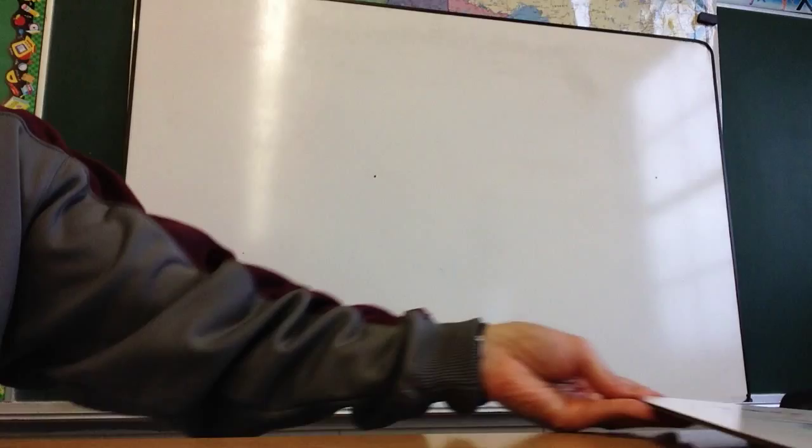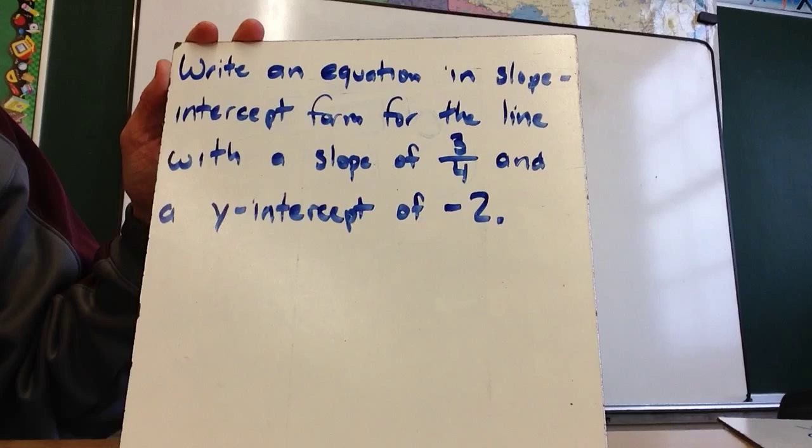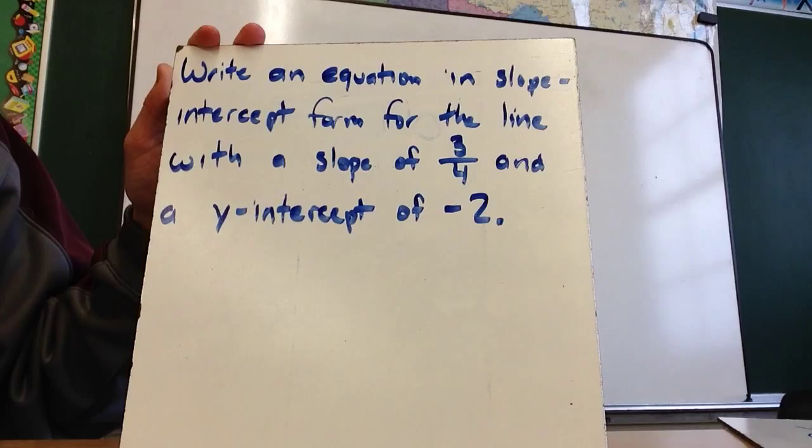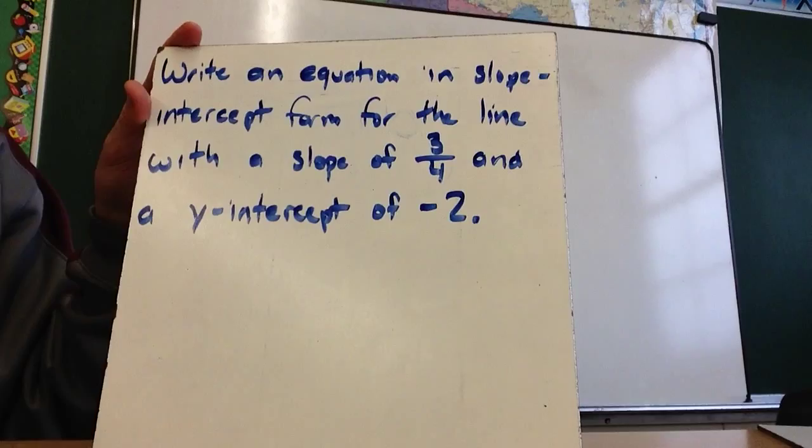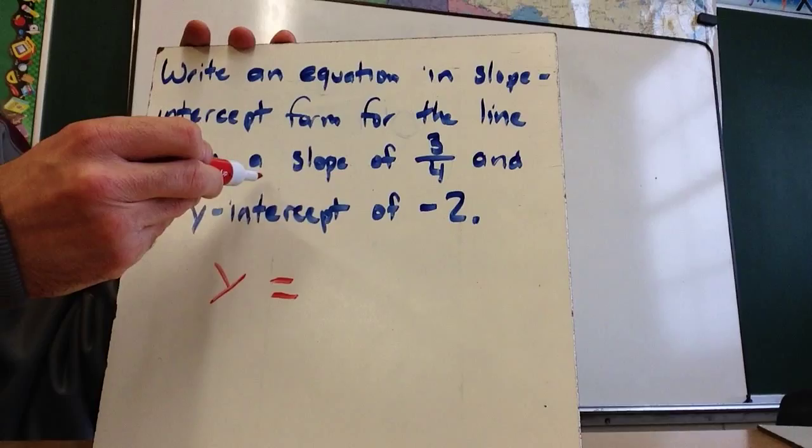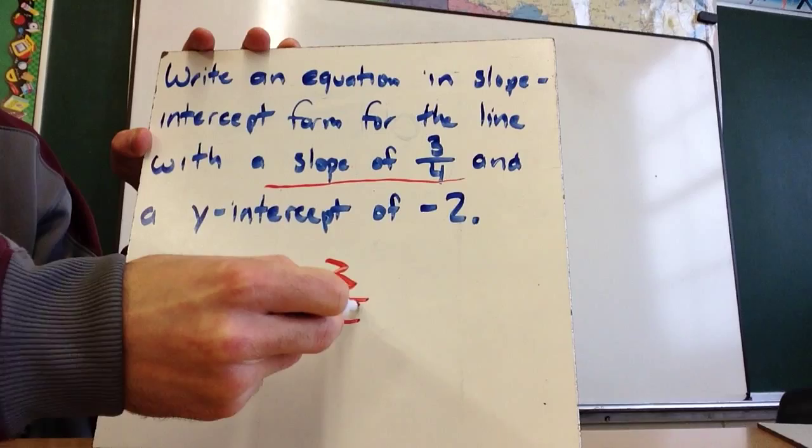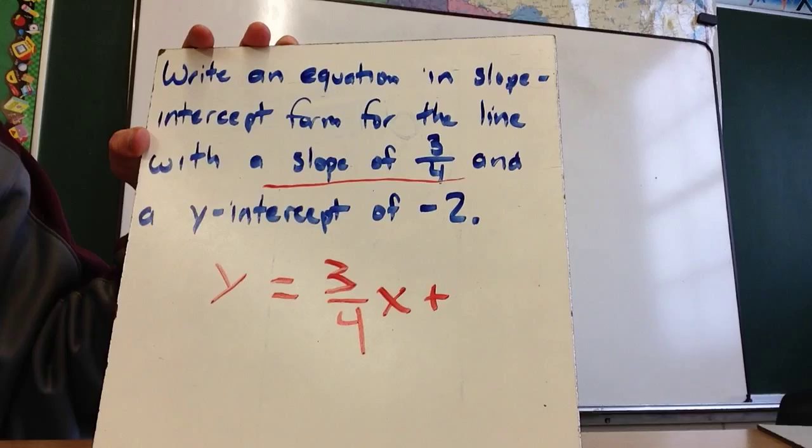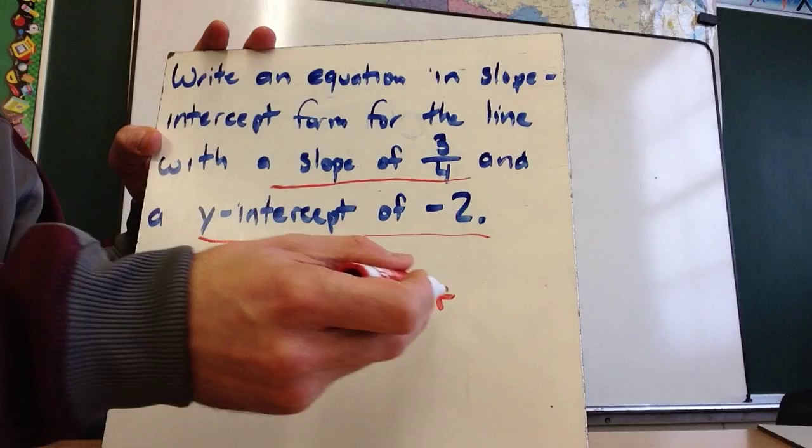But we're going to come back to this slide probably in a little bit. So if you look at this problem, write an equation in slope-intercept form for the line with a slope of 3 fourths and a y-intercept of negative 2. So using, come back to this, y equals mx plus b, the y and the x are going to, we're going to include inside this formula. So this is going to be y equals m. So I need to figure out what is the slope. So this is mx plus, and this is my y-intercept, plus b.